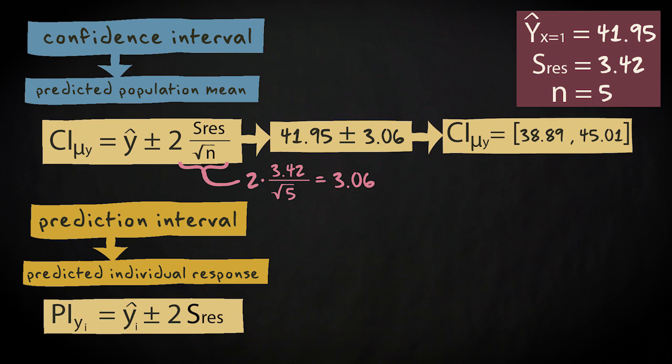The second interval used for predictions of individual responses is referred to as the prediction interval for a predicted response. Suppose we want to know what the range of plausible predicted popularity scores is for an individual one year old cat.